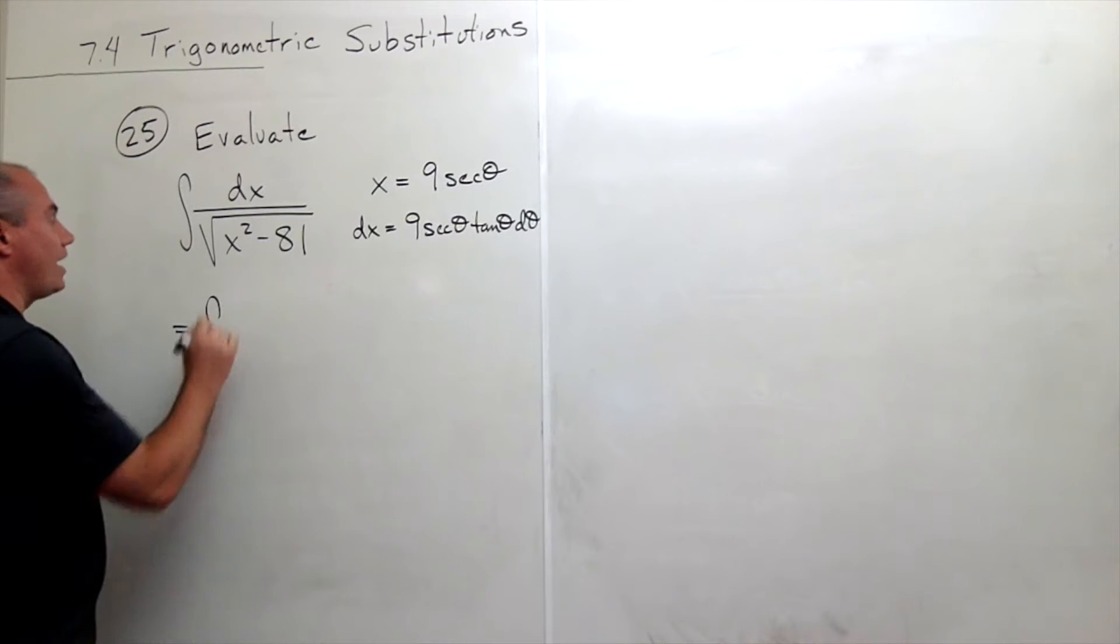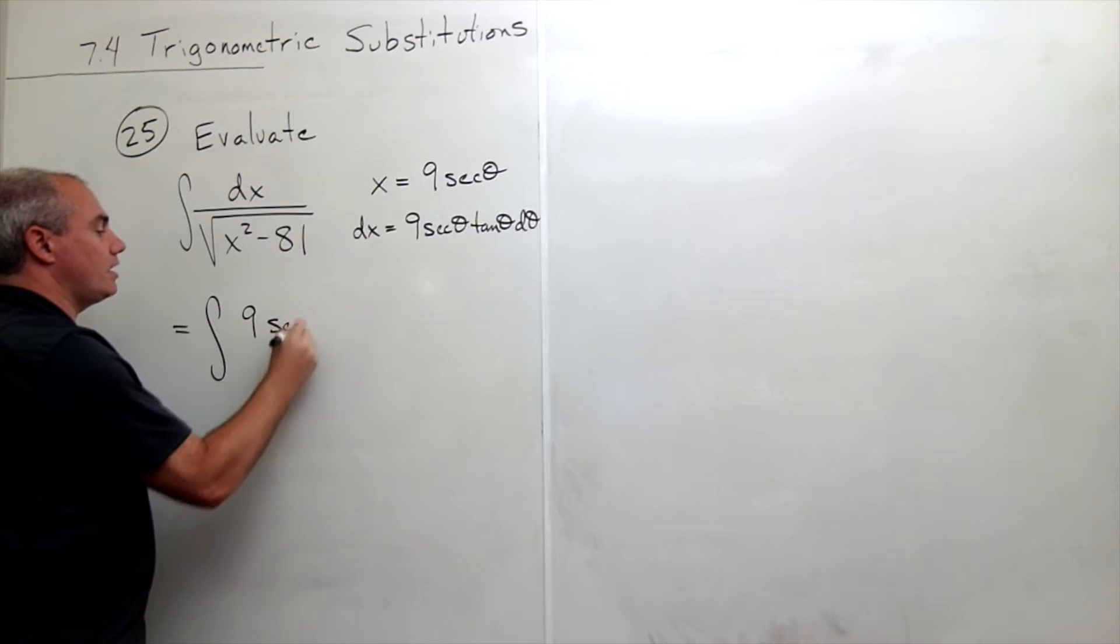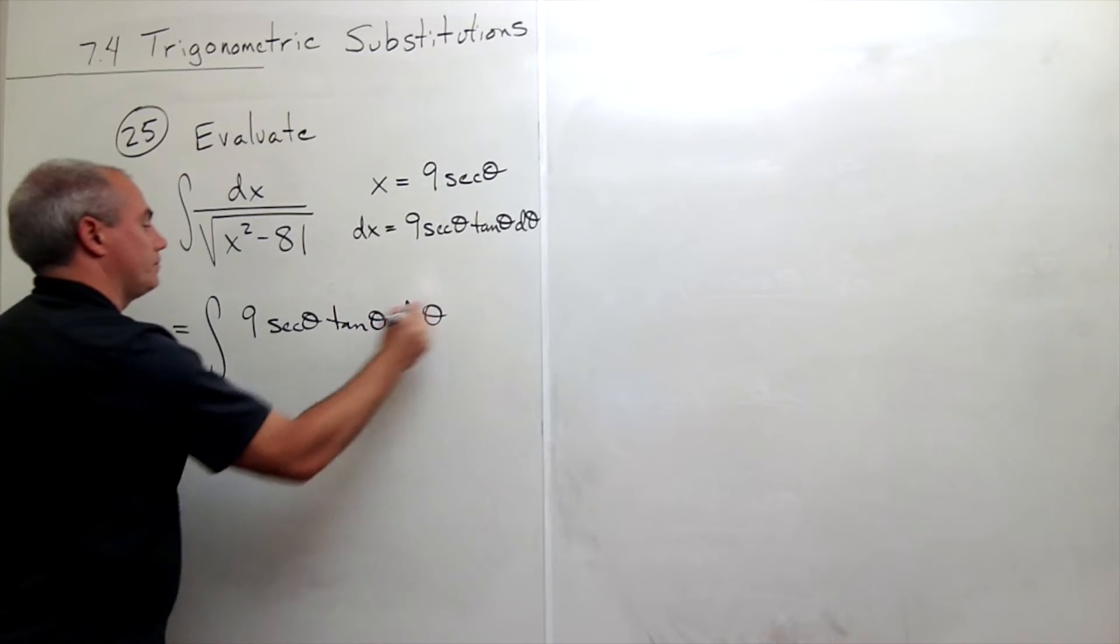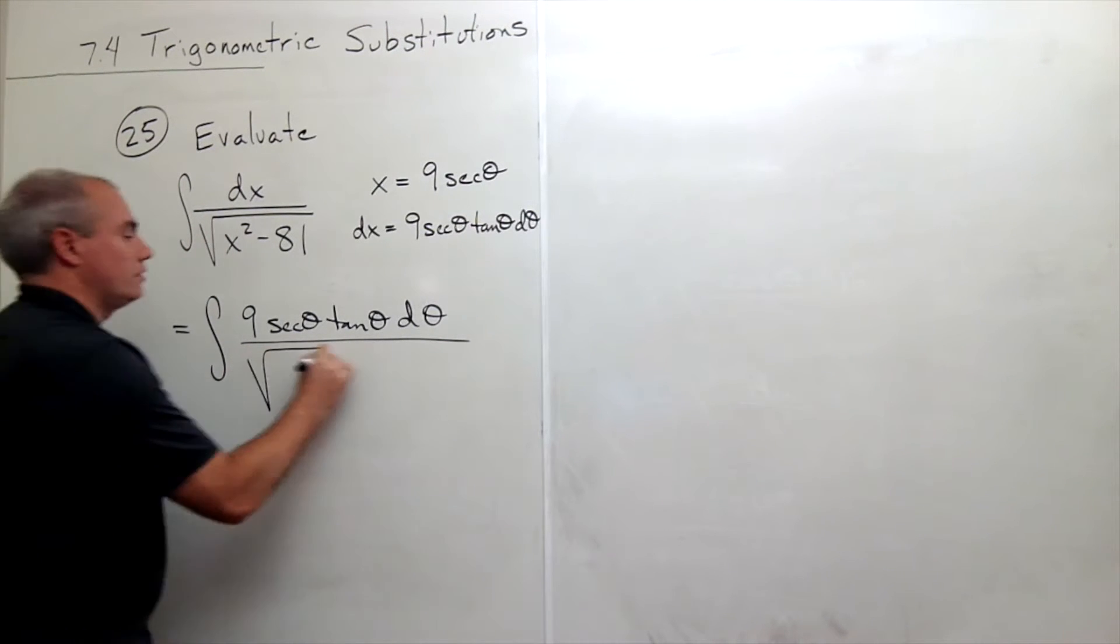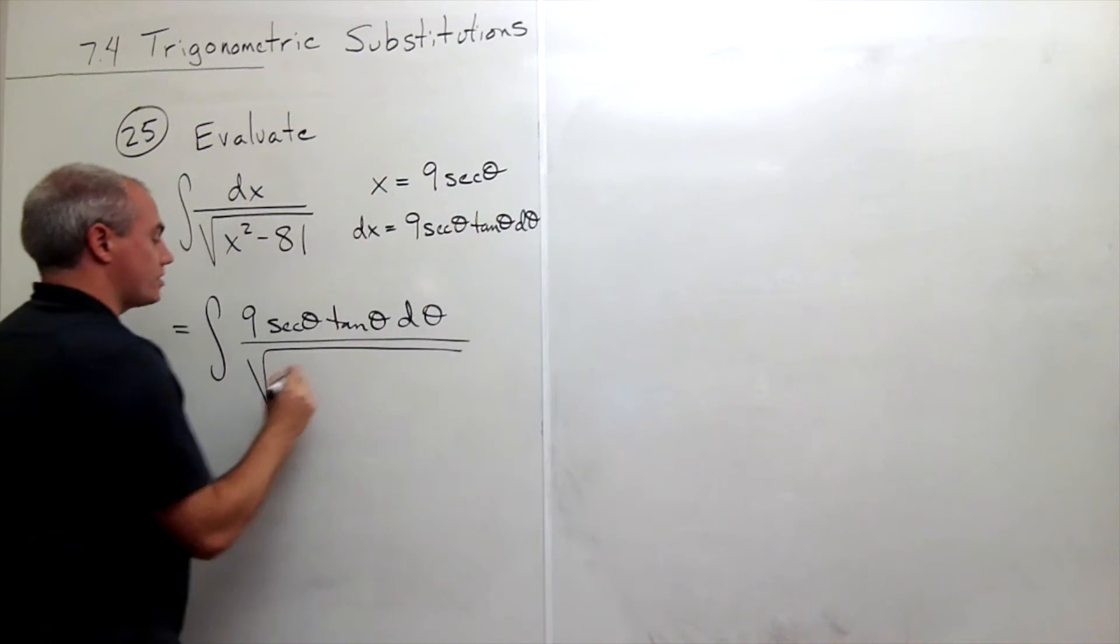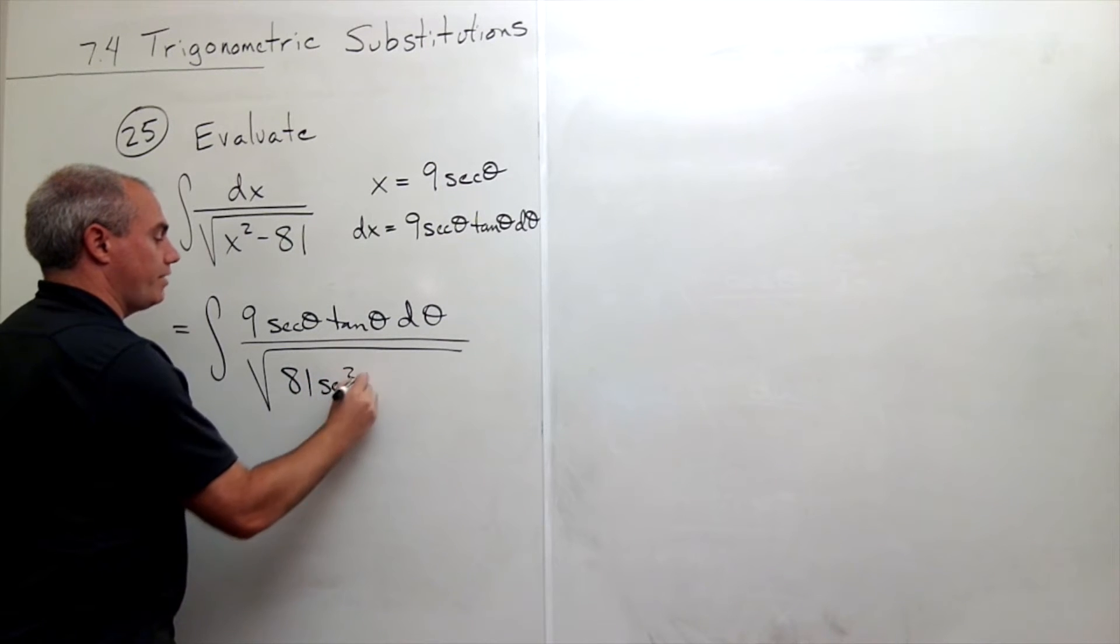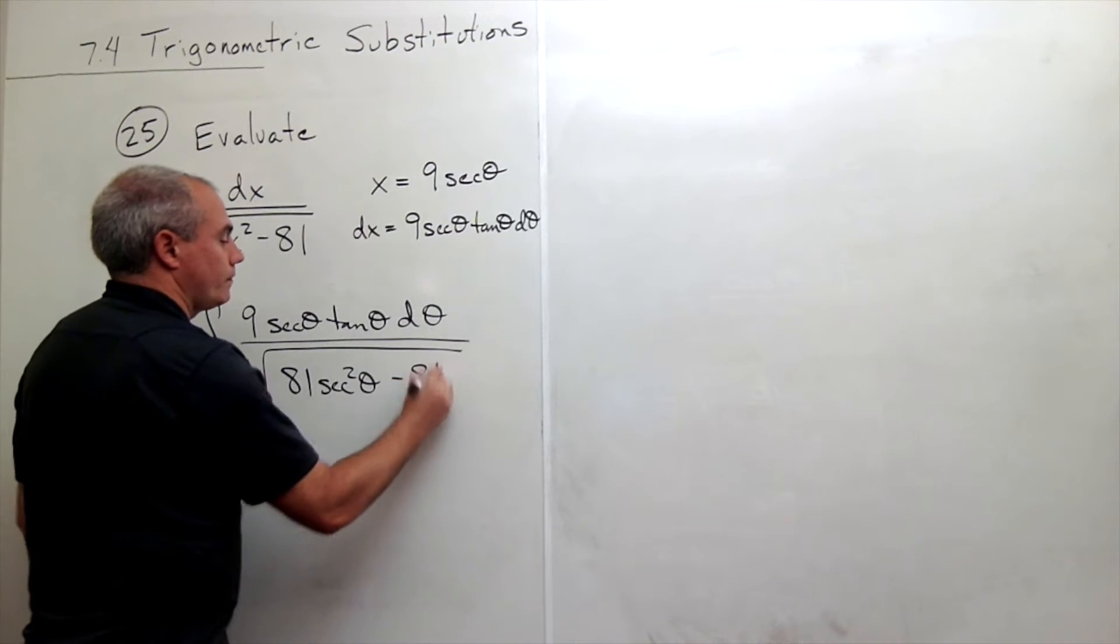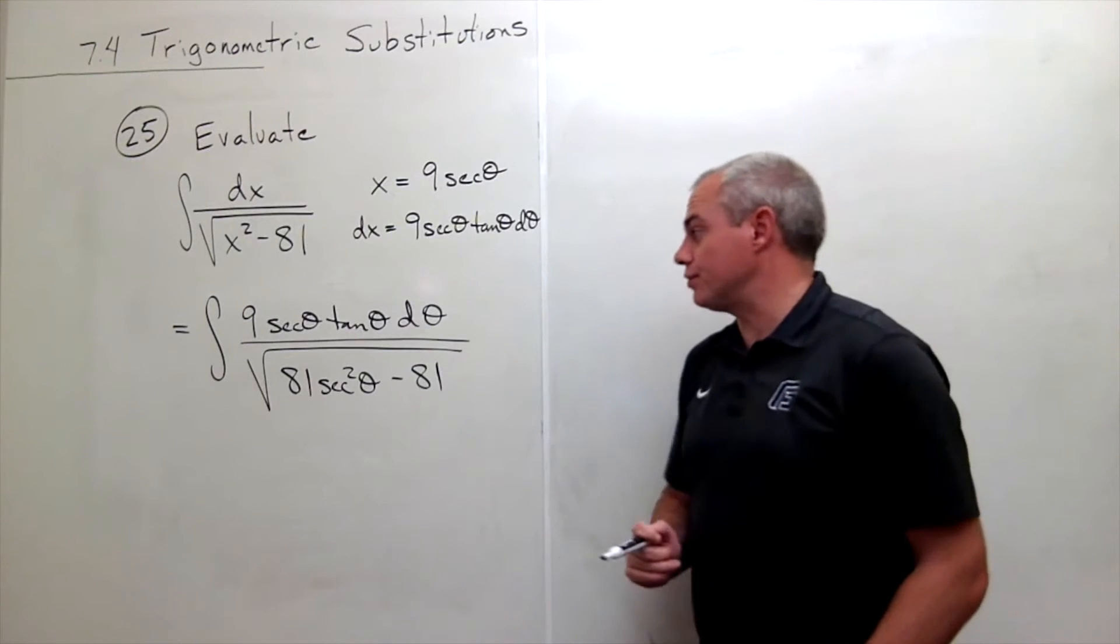On top I have dx, which becomes 9 secant theta tangent theta d theta. On the bottom, we have the square root of x squared. Since x is 9 secant theta, x squared is 81 secant squared theta, so we get the square root of 81 secant squared theta minus 81.